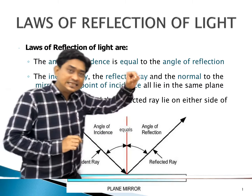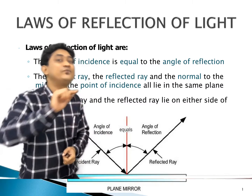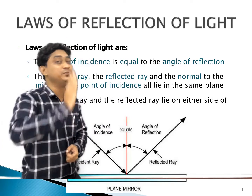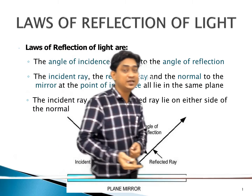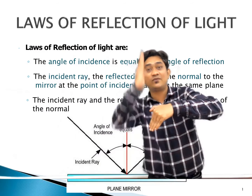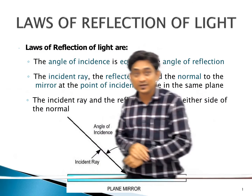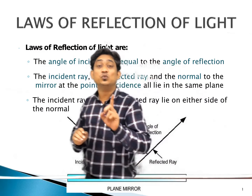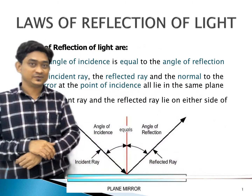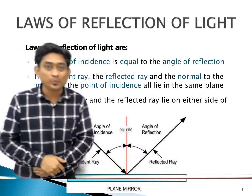If an incident ray makes an angle of 55 degrees with the surface of a plane mirror, then what is the angle of reflection? Tell me the answer in the comments. Thank you so much.